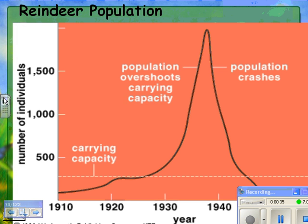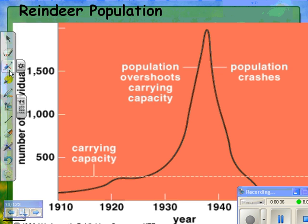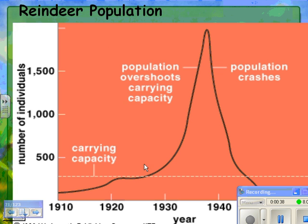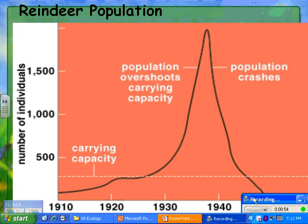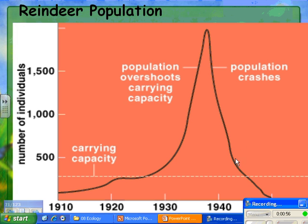Here's an example of that. This is a reindeer population somewhere. Scientists have estimated that the carrying capacity is around 300 organisms or so. The reindeer population increased, and then at one point they really overshot their carrying capacity. So you get what's called a population crash, when the population goes very low.